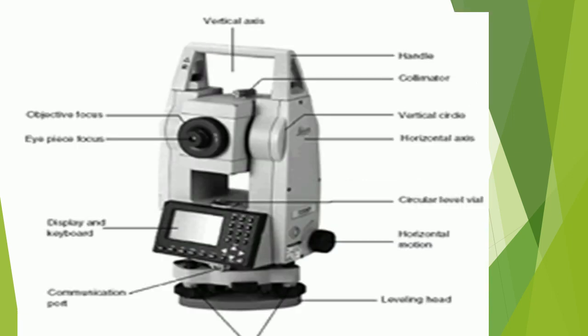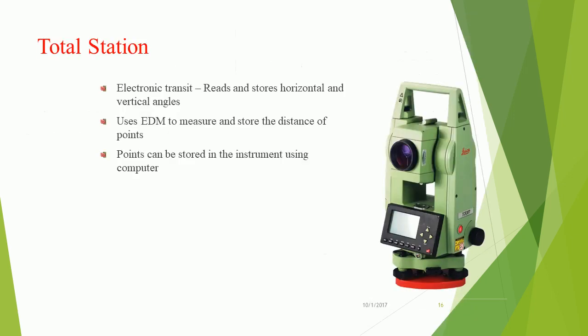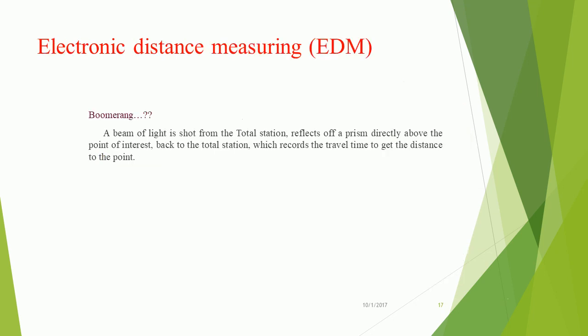Total station and its parts: The electronic transit reads and stores horizontal and vertical angles. It uses EDM to measure and store the distance of points, which can be stored in the instrument using a computer. For EDM: a beam of light is shot from the total station, reflects off a prism directly above the point of interest, back to the total station, which records the travel time to get the distance to the point.